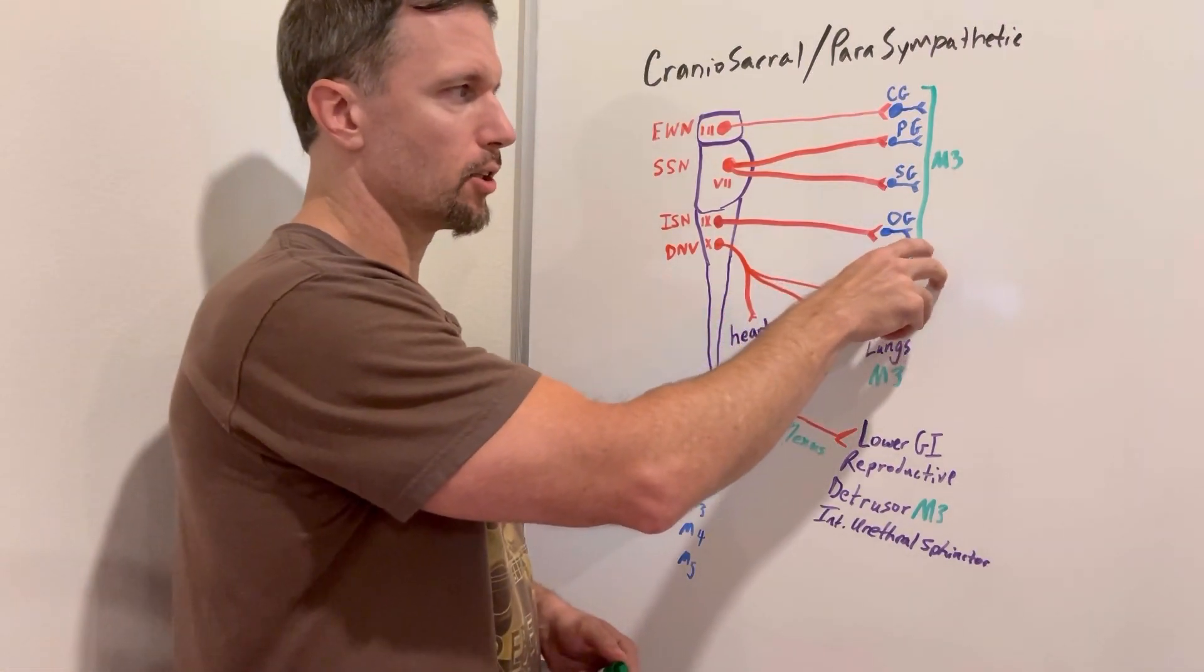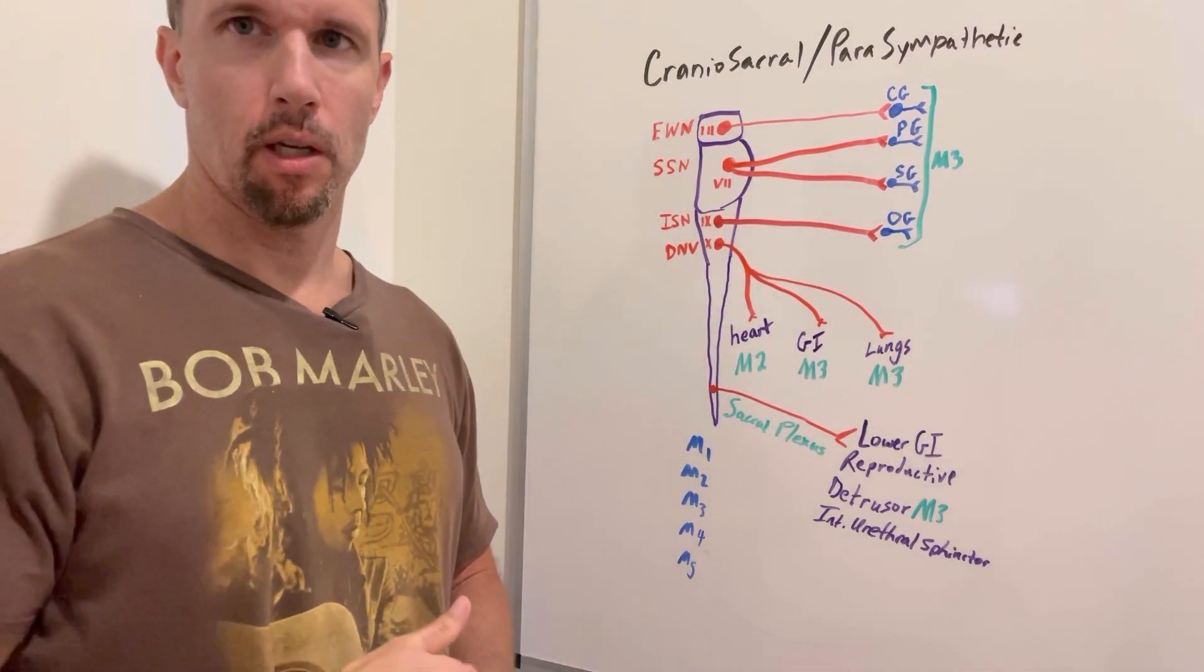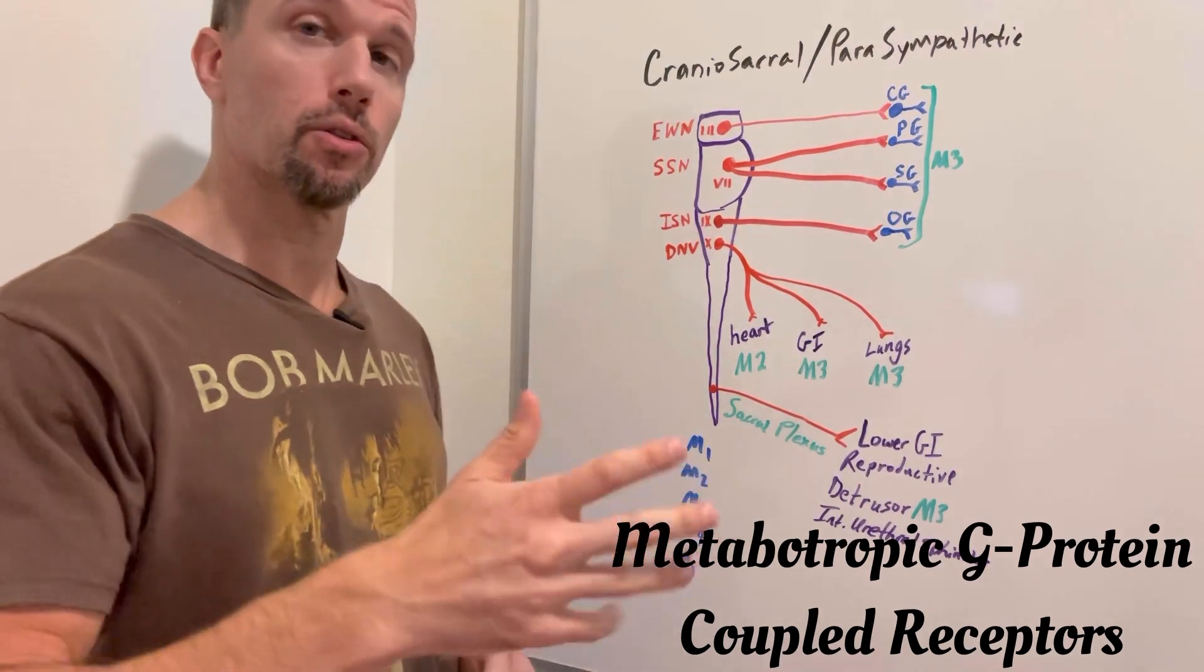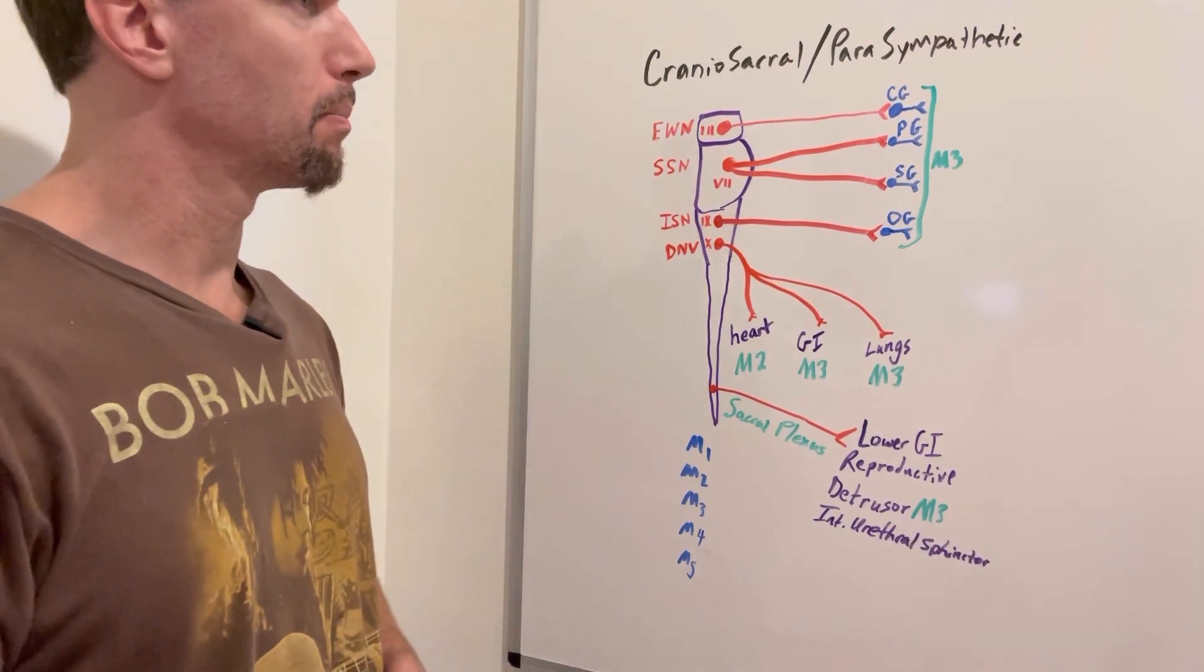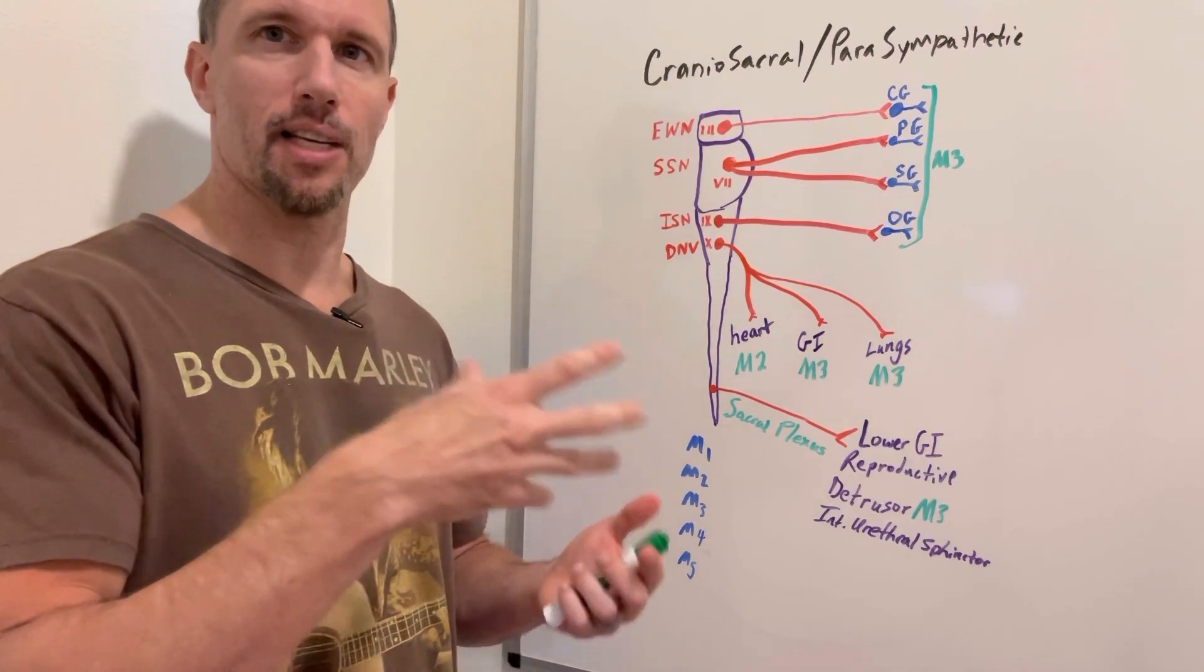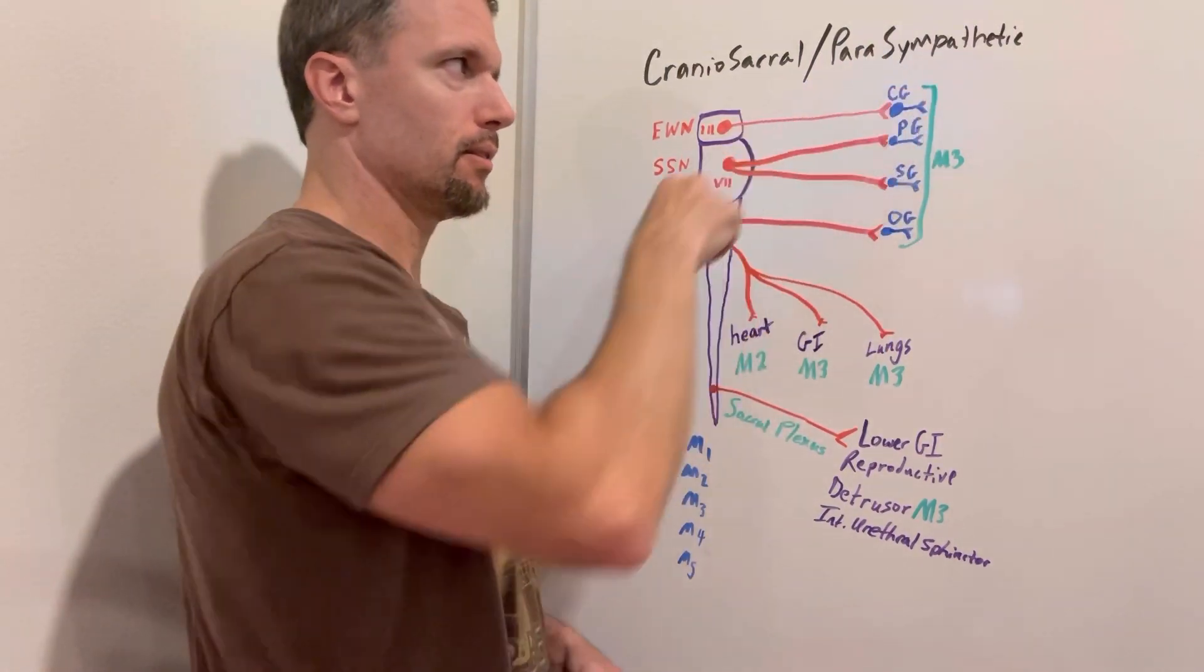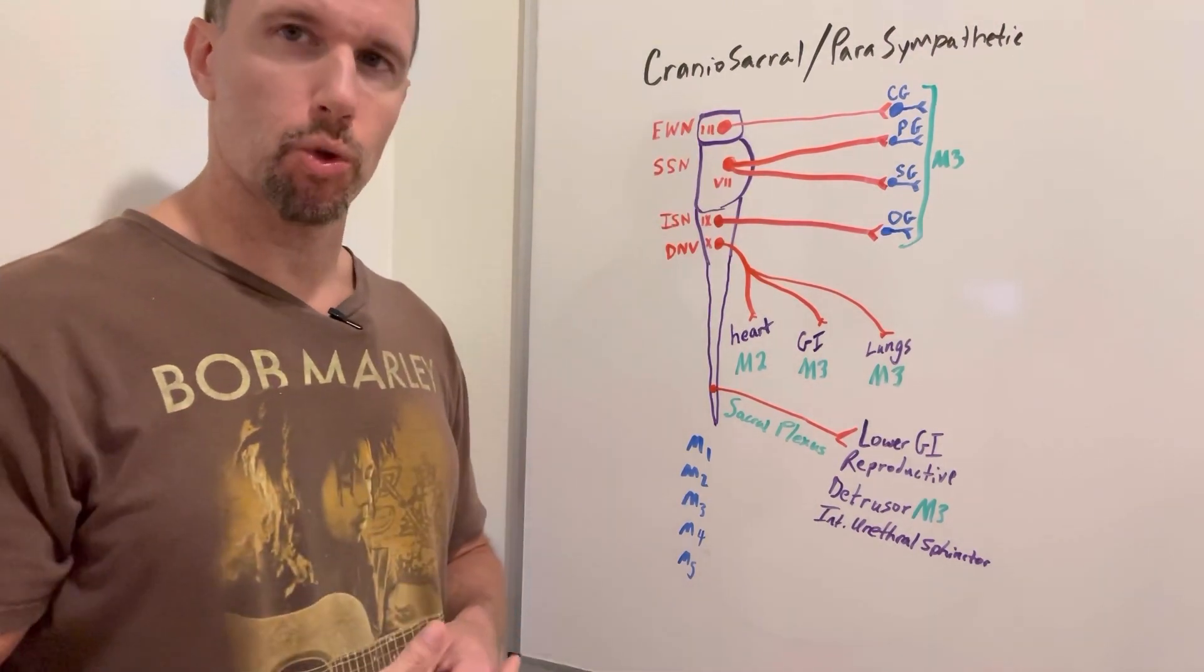Anytime it's going onto its target tissue from this postganglionic fiber, it's muscarinic receptors. These aren't ligand-gated ion channels, these are metabotropic proteins. These metabotropic proteins are G proteins, and G proteins have second messengers inside the cell that change the activity of the cell. In this case, it'll cause increased secretions and cause constriction of the pupil. That's always muscarinic on the post-synaptic side.